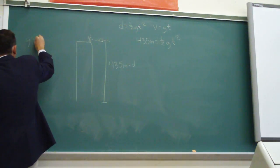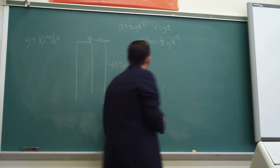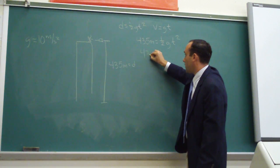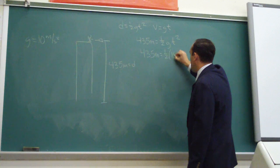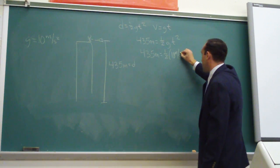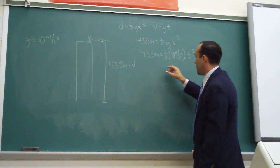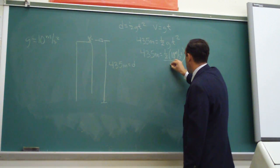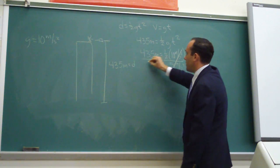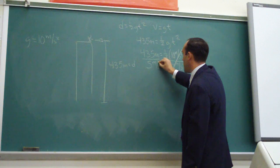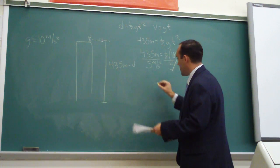We're going to say that gravity, for simplicity's sake, is 10 meters per second per second. So the equation becomes: 435 meters = ½ × 10 m/s² × t². One-half of 10 gives us 5, so we divide both sides by 5 m/s². 435 divided by 5 is 87.